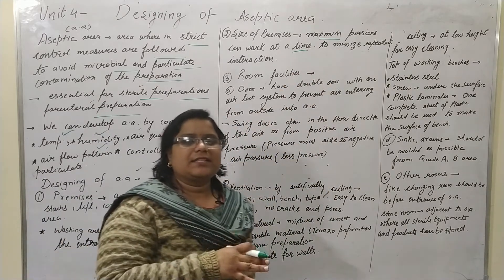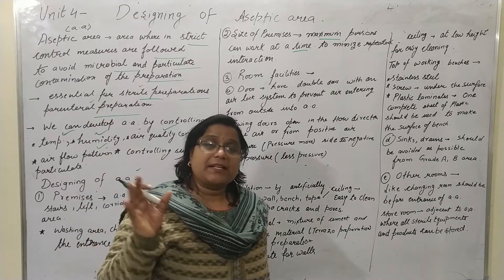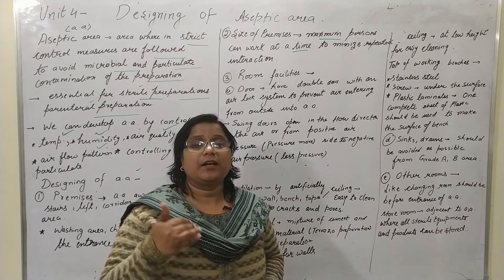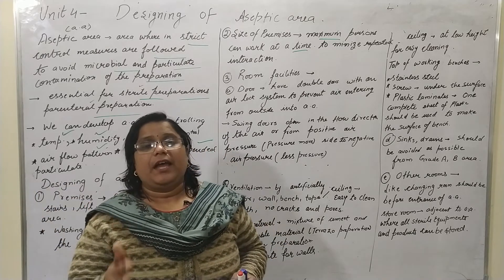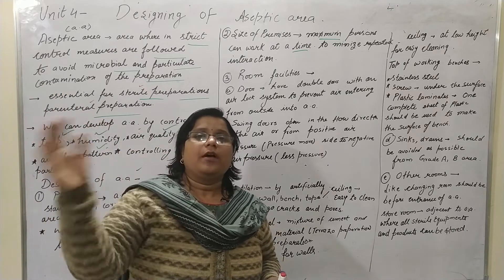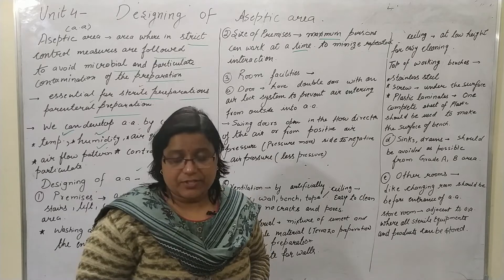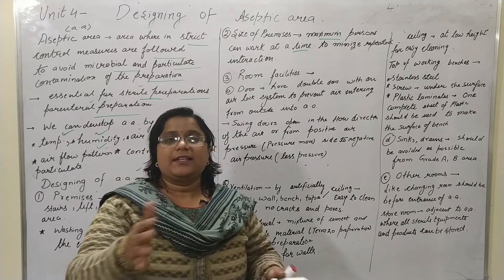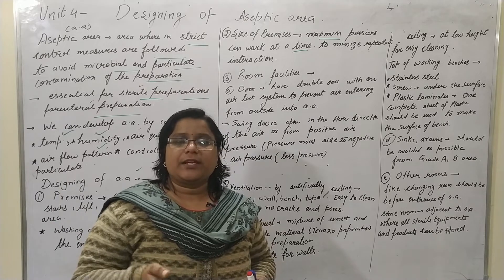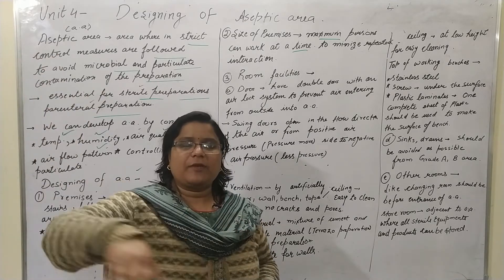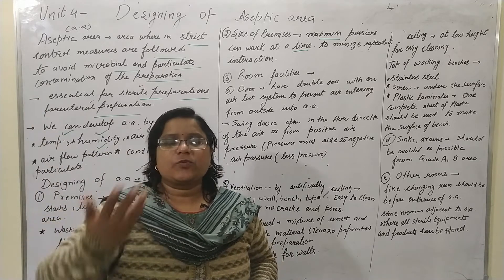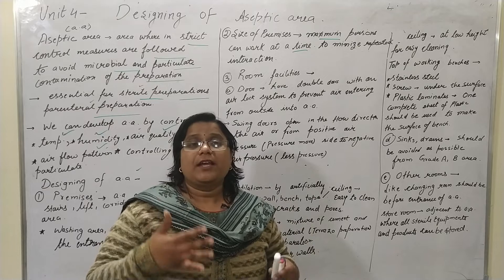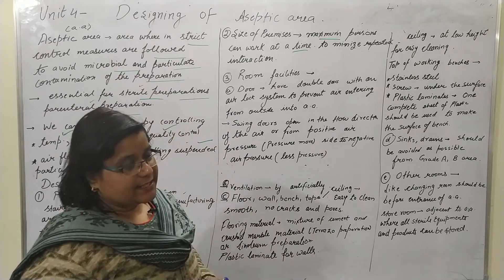The size of the premises should be such that maximum persons can work at one time. This is to minimize interactions: if the aseptic area is small and 10 persons come in at once and then exit, followed by another 5, multiple interactions occur. To minimize such interactions, the aseptic area should be large enough to accommodate the maximum number of persons at one time.